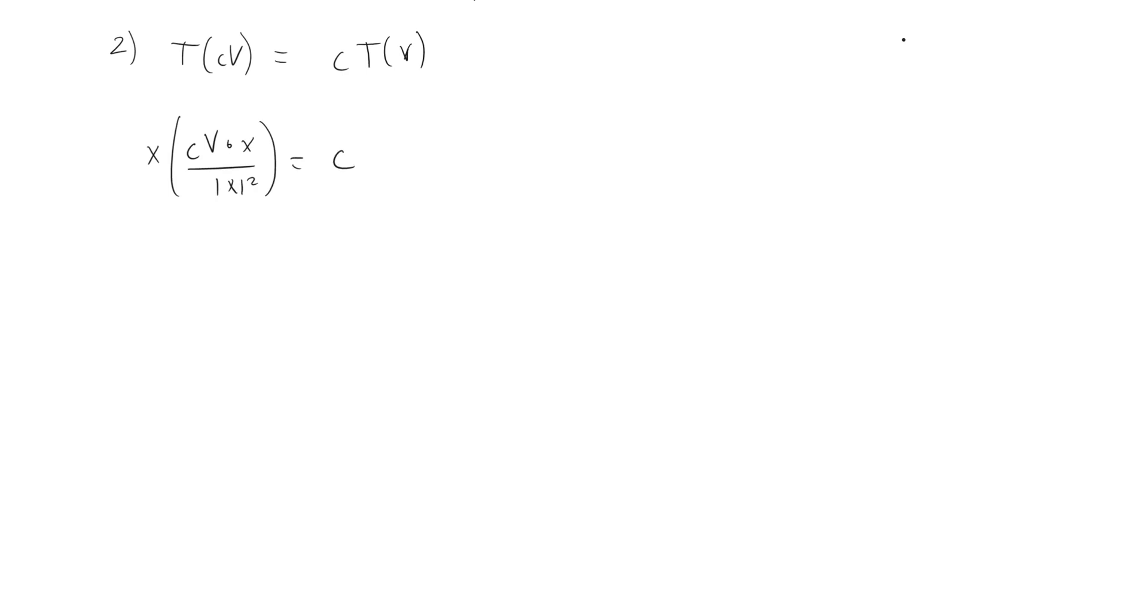This is going to be equal to, I'm going to pull C out, C times X times V times X divided by the length of X squared. Now the cool thing about this is that we can just pull the C out because it's a constant. So this equals CX V times X length of X squared.